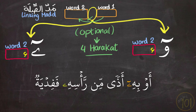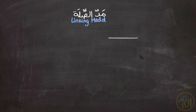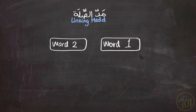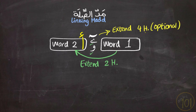Another example is shown with and without the extension of the Linking Mad. So to summarize: Linking Mad is a type of Mad which happens only between words. You extend it for two Harakāt, just like the Natural Mad. And if the word that comes after it starts with a Hamza, then you have the option to extend it for four Harakāt.